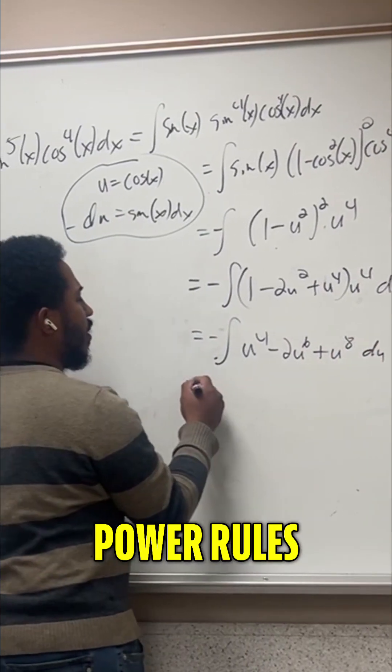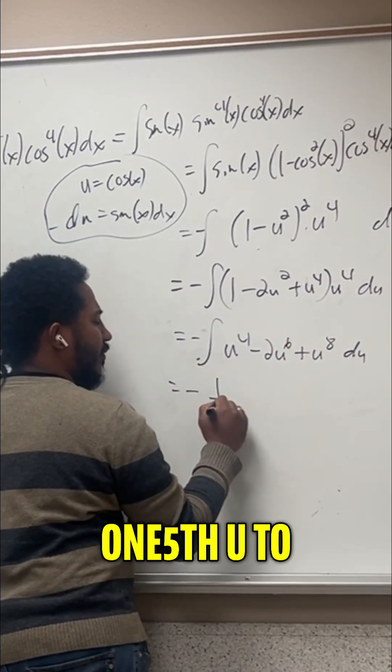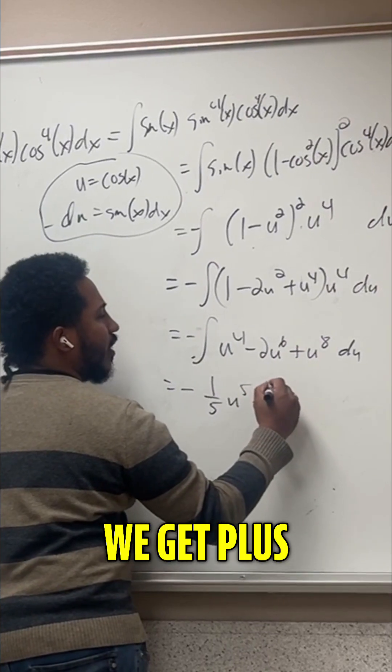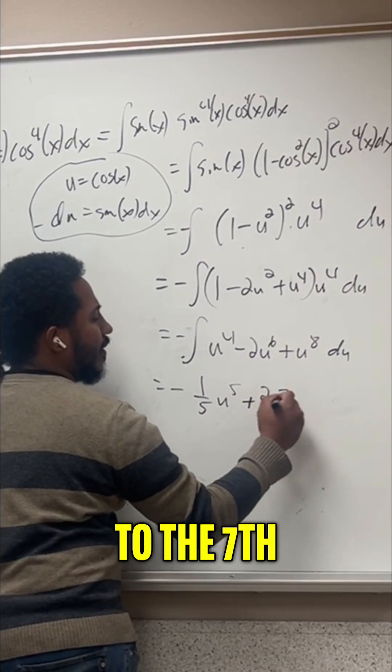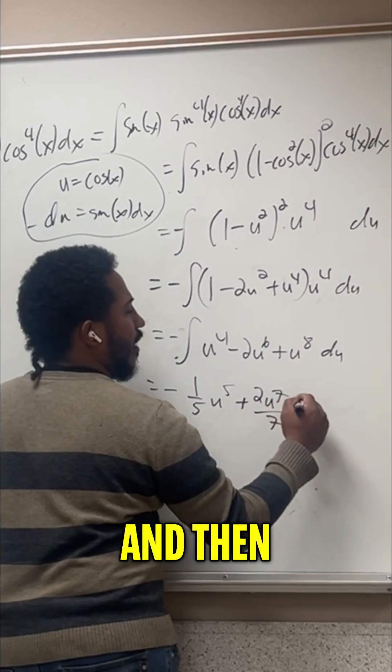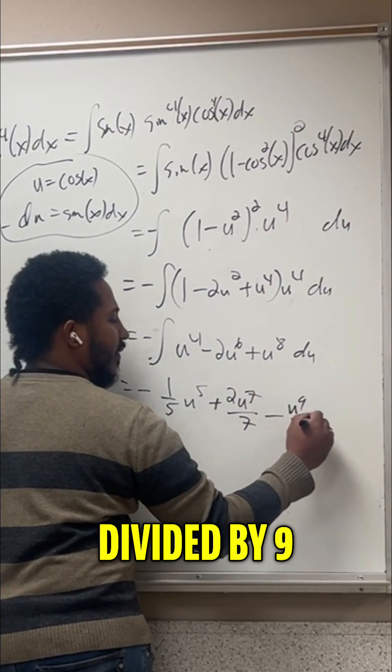Now it's just a bunch of power rules. So we get the negative of one fifth u to the fifth. Distributing that negative, we get plus two u to the seventh divided by seven, and then minus u to the ninth divided by nine.